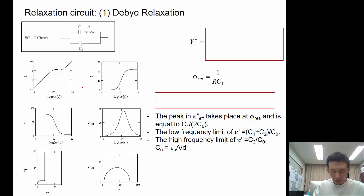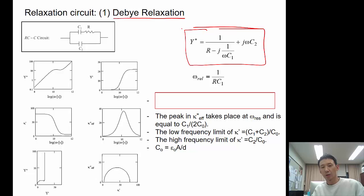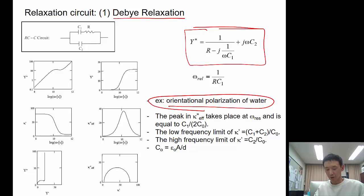Debye relaxation circuit is one of the widely used ones. You have a C2 capacitor connecting in parallel with one resistor. The resulting equivalent circuit analysis gives you the admittance of this equation. This represents the orientational polarization of water. We've seen this kind of relaxation behavior when you have water.